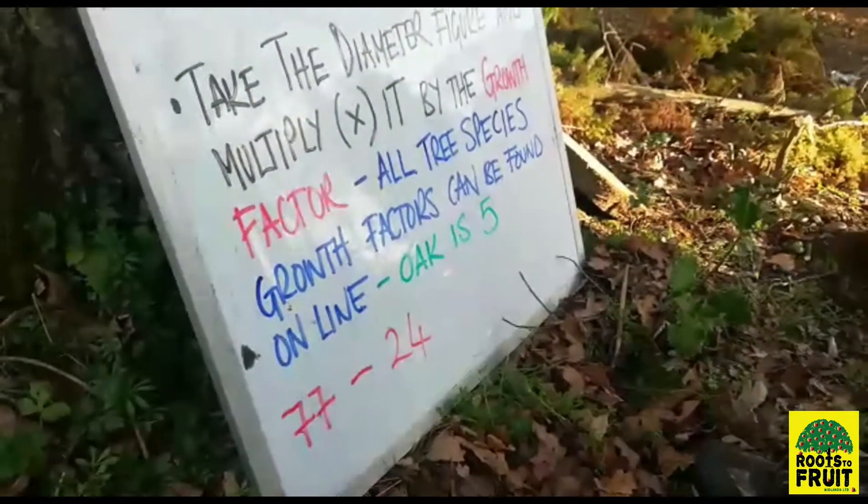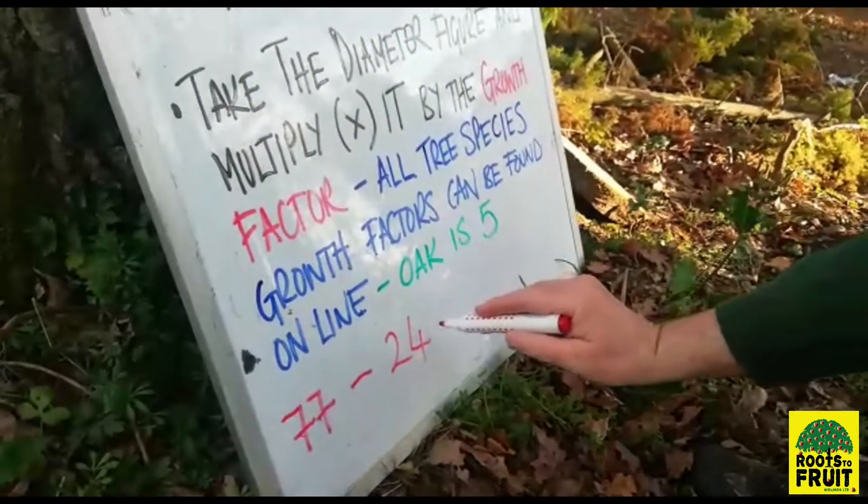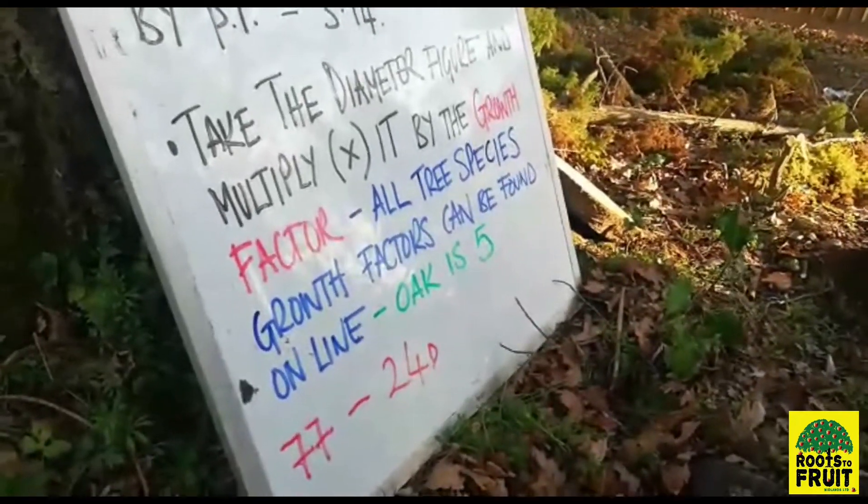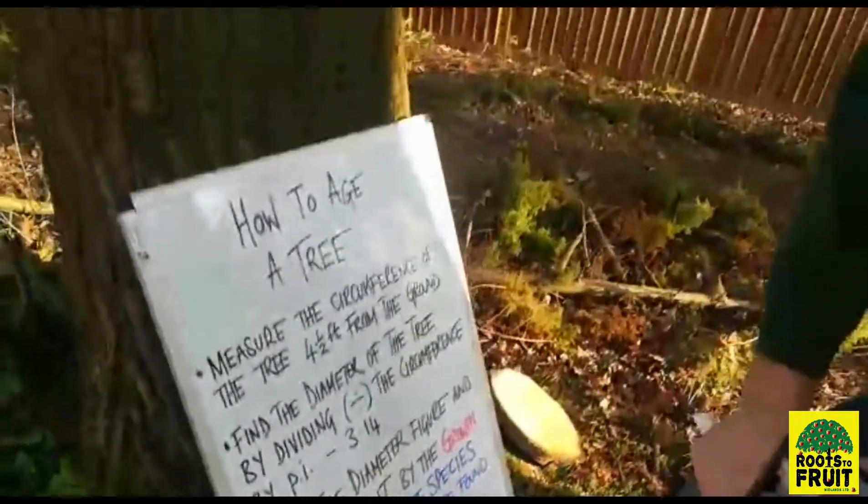So that is the diameter — I'll put a little 'd' there so we can remember. Now the next step is we have to take that diameter measurement, in this case 24 inches, and we have to multiply it by what we call the growth factor of the tree.